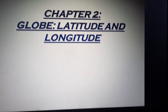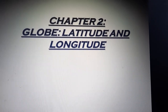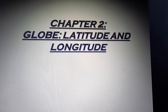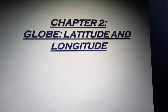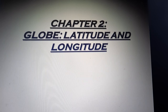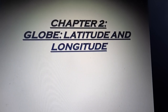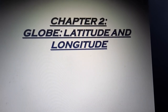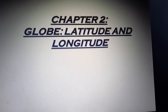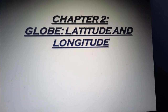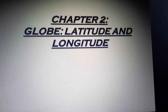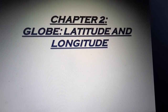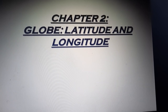This is our front page or cover page of our textbook. We are starting with our new chapter: Globe, Latitude and Longitude. I know that you all are aware about this chapter, so it would be very easy. Earth is not a sphere — it is slightly flattened at the north and south pole and bulges in the middle. The globe is a true model, or you can say the miniature form of the Earth.